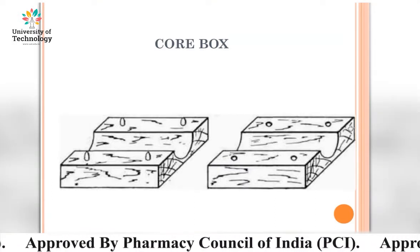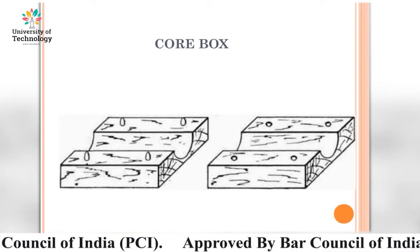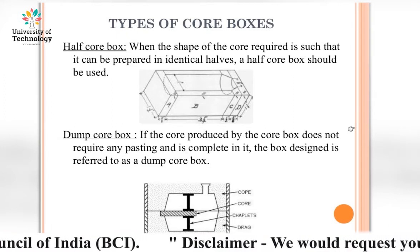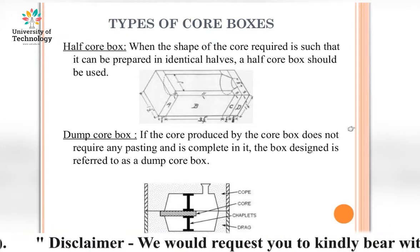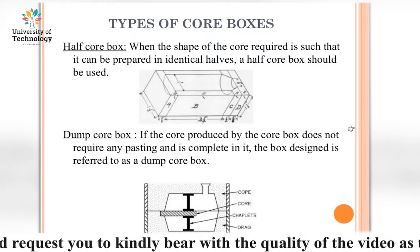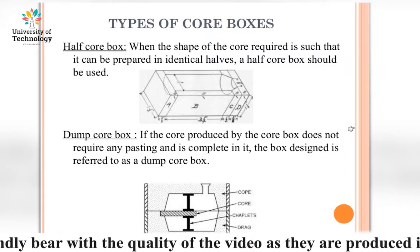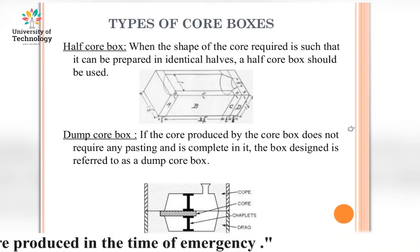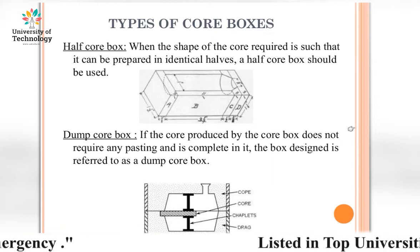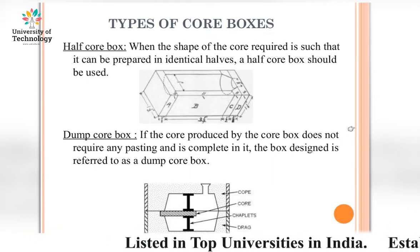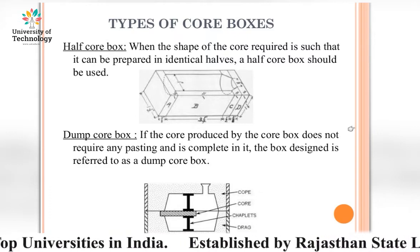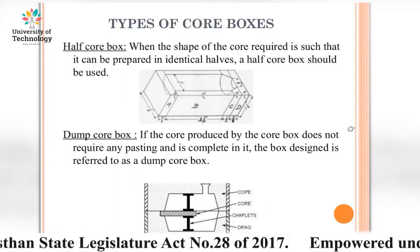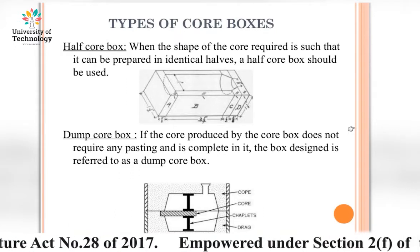We can see the core box in this slide. The basic types of core boxes are as follows. The half core box is used when the shape of the core required is such that it can be prepared in identical halves. The dump core box is used when the core produced does not require any pasting and is complete in itself — such a box is referred to as a dump core box, as per this figure.